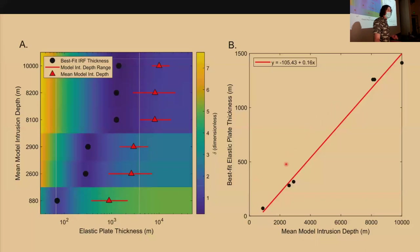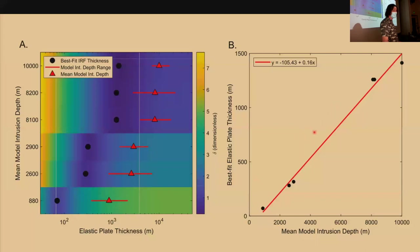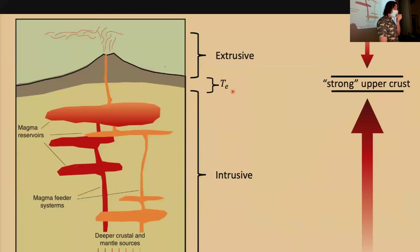Maybe more surprisingly, we found that the surface response to stochastically placed intrusions could be parameterized as the response of a thin elastic plate to a single basal force. On the left, the red triangles show mean and range of intrusion depths, and the black dots show the effective elastic thickness of a plate that could parameterize the topographic response — a neat linear relationship between the two. This is handy because the thin elastic plate model is much simpler than the elastic half-space inflation model, especially when we don't know the necessary depth parameters. It also gives us a way to think of the Earth's surface as the top of this transcrustal magma system.